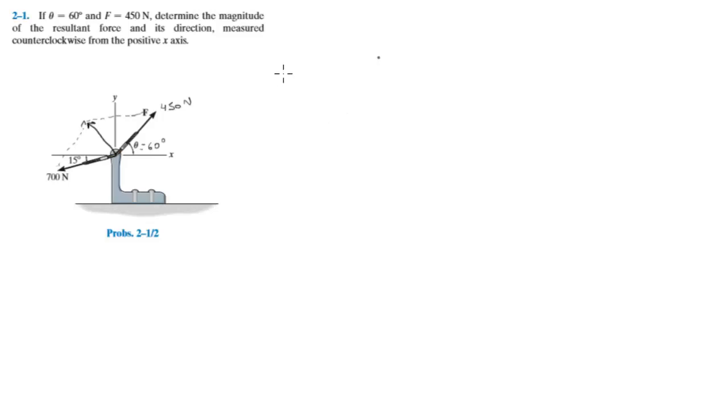For example, the resultant force on the x-axis would be negative 700 cosine of 15 degrees plus 450 cosine of 60 degrees, and this is equal to